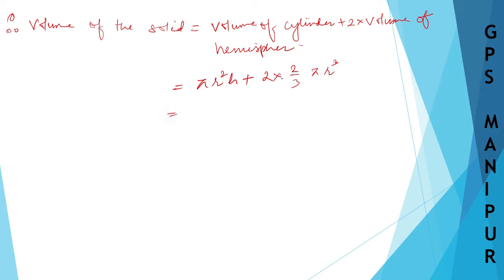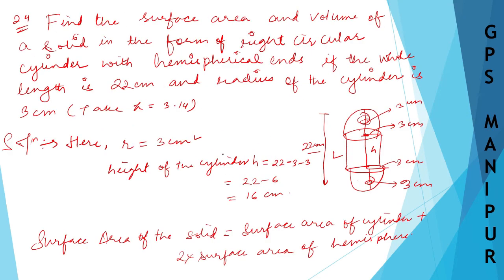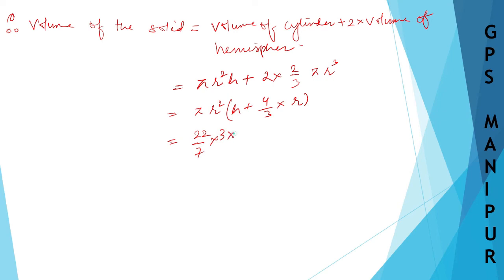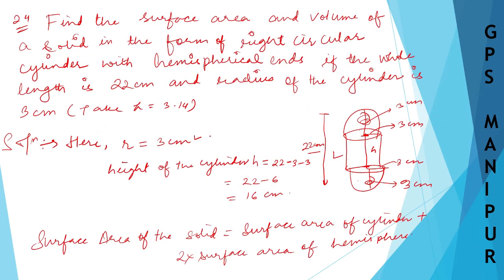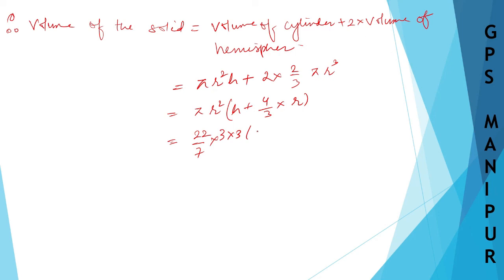Taking π and R² common, what is left is H from the cylinder part, plus 4/3 into R from the hemisphere part. The question says to take π equal to 3.14. So we have 3.14 into R squared, which is 9, into the bracket 16 plus 4 — that is 20.